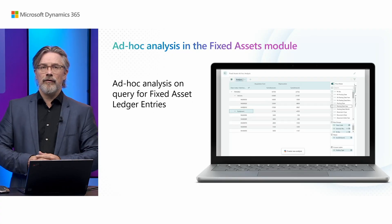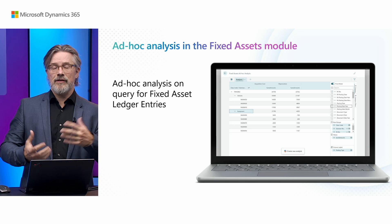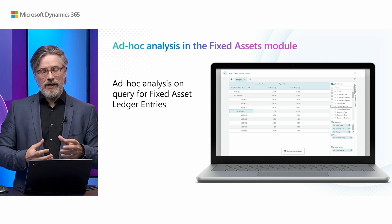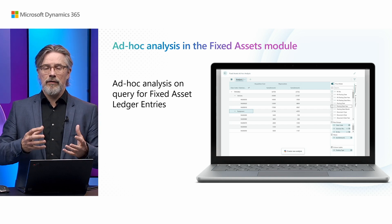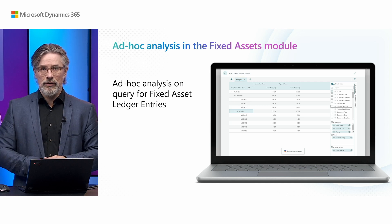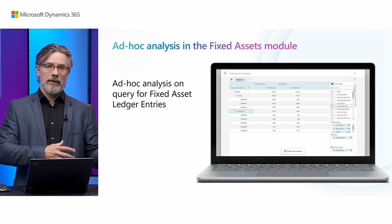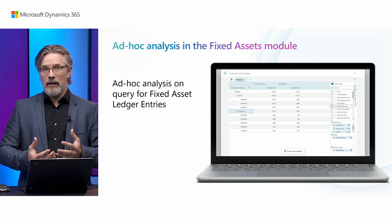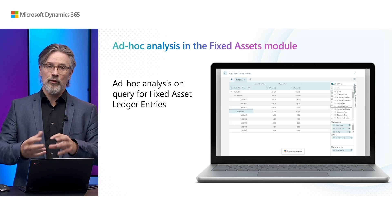We also have, for fixed assets, this is the first module where we have done it — we have created a query. It's a query based on a star schema so that you can query the fixed assets ledger entries and do your own views on top of that, either to complement the reports that are there or for quick fact finding. The benefit is that it queries multiple tables at the same time, so it's not just the table you see on the page, and it's good for fact finding or validating your data.